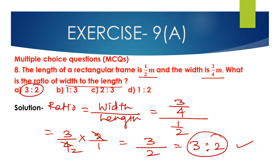The answer is 3 is to 2. So option A is the correct option. The ratio of width to that of length is 3 is to 2, and option A, 3 is to 2, is the correct answer.